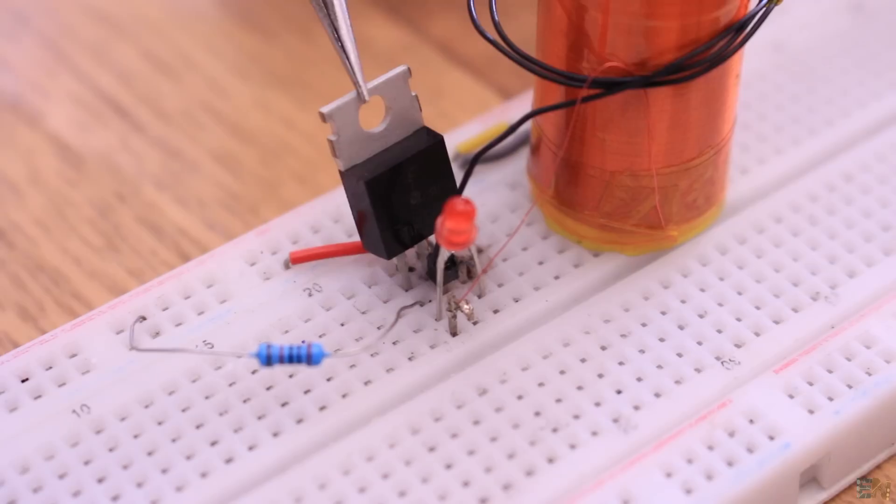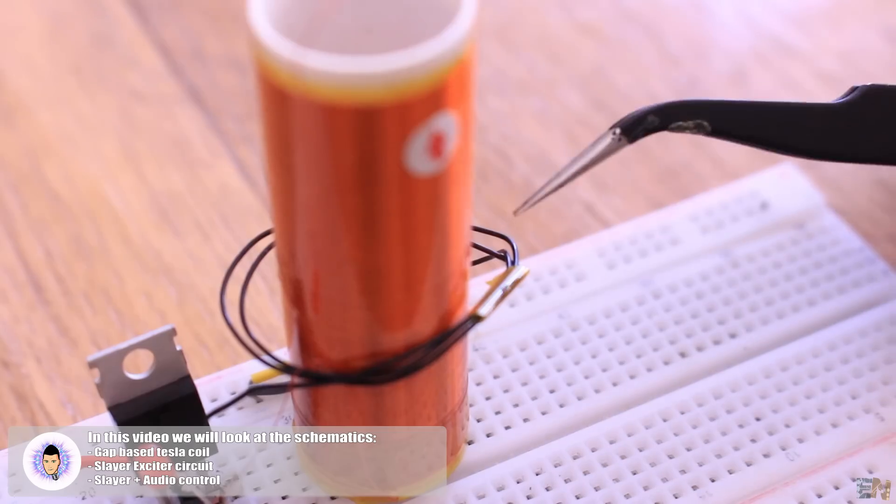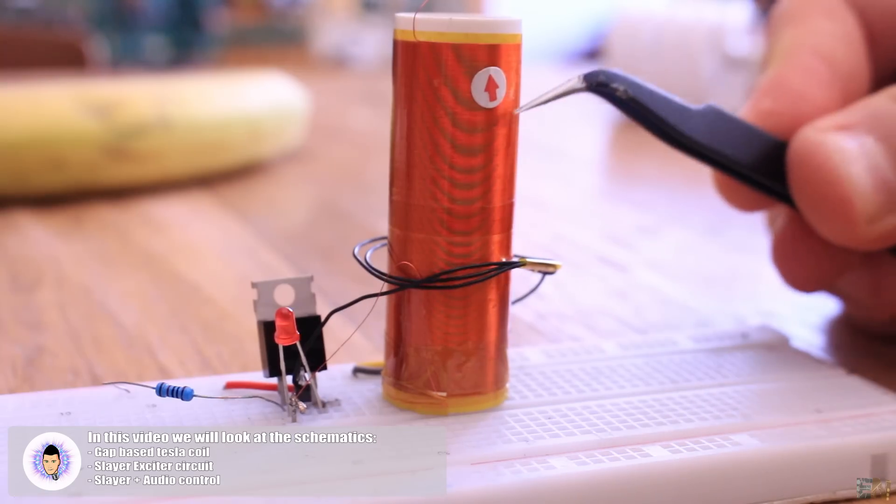As you can see, we have just a BJT transistor, a light emitting diode and a resistor. Then we have 3 windings as the primary and 350 windings for the secondary, which is this big coil.